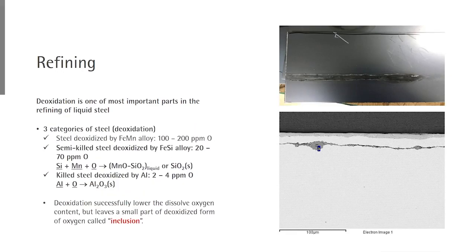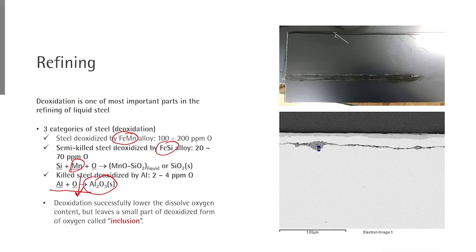There are several types of deoxidation methods. We may deoxidize liquid steel by adding ferromanganese alloy, forming Mn oxide, or by adding ferrosilicon alloy, forming SiO₂, or silicon may react with oxygen and manganese to form manganese silicate oxide, which is typically liquid at steelmaking temperatures. Most typically, we use aluminum to deoxidize liquid steel — it is a very strong deoxidizer and cheap. By adding aluminum, we can form alumina, decreasing oxygen level to just a few ppm.